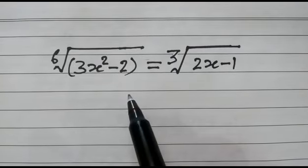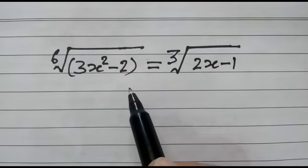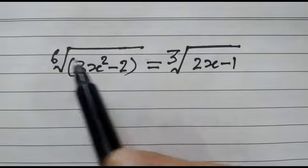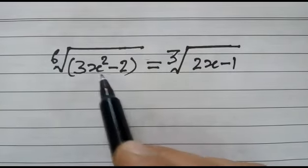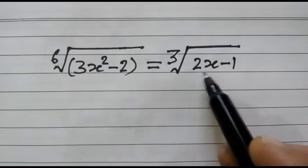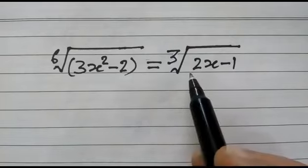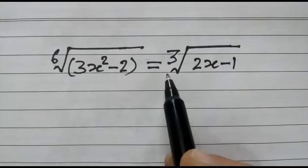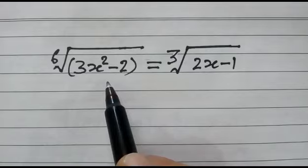Hi friends, good morning. Today we have taken a problem based on sets and series. Here, sixth root of 3x squared minus 2 is equal to cubic root of 2x minus 1, and we have to solve it — we have to find out the value of x.